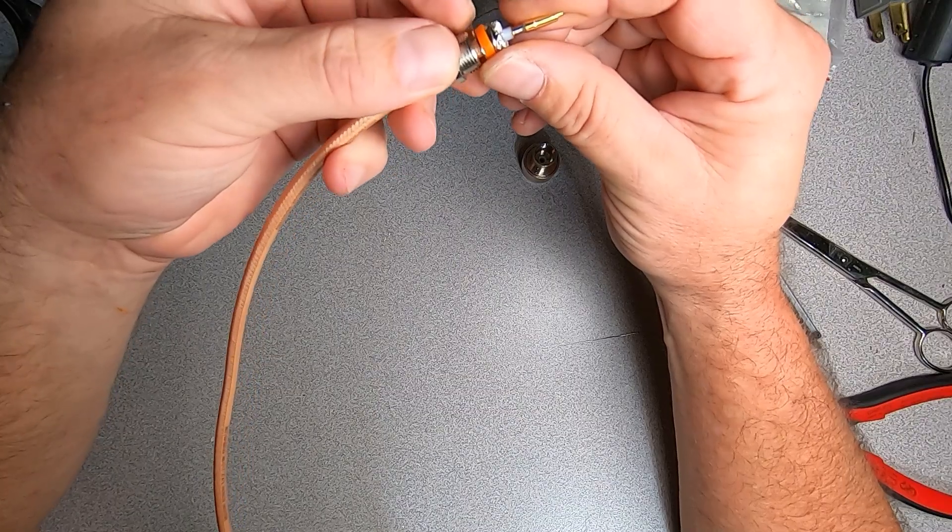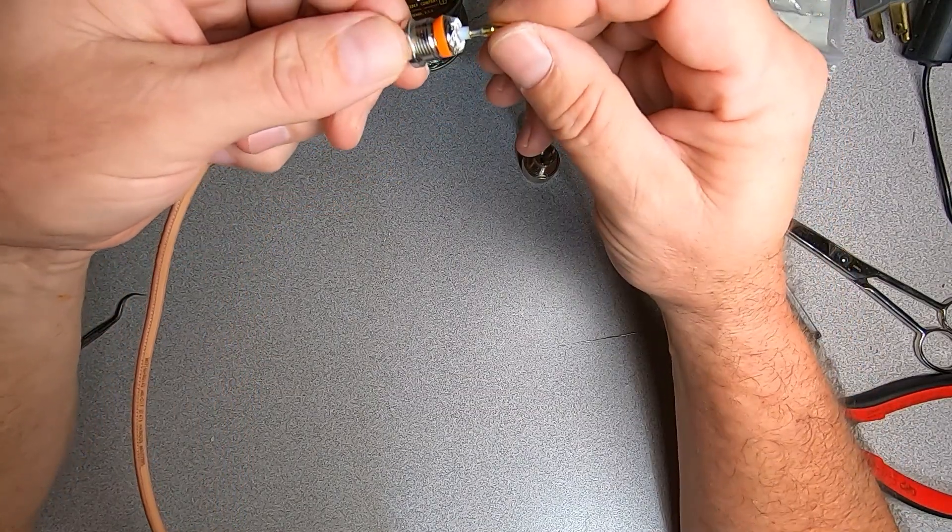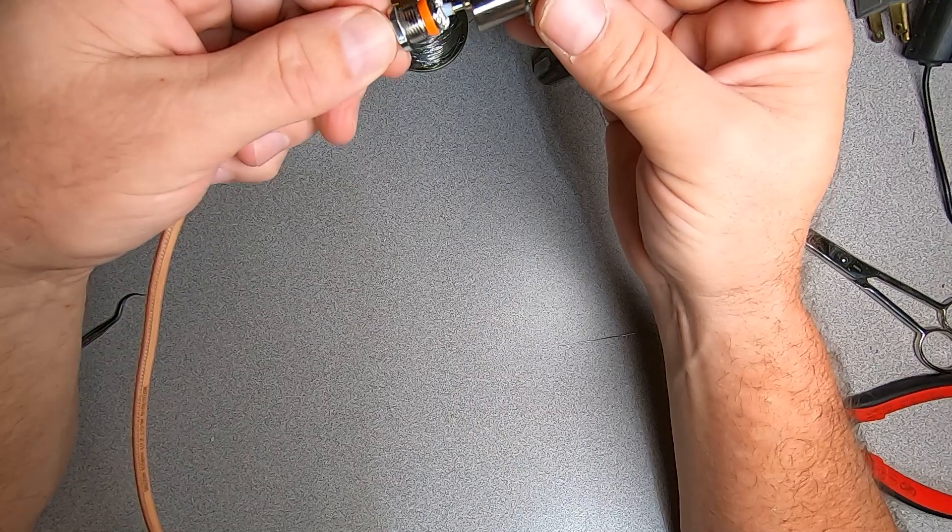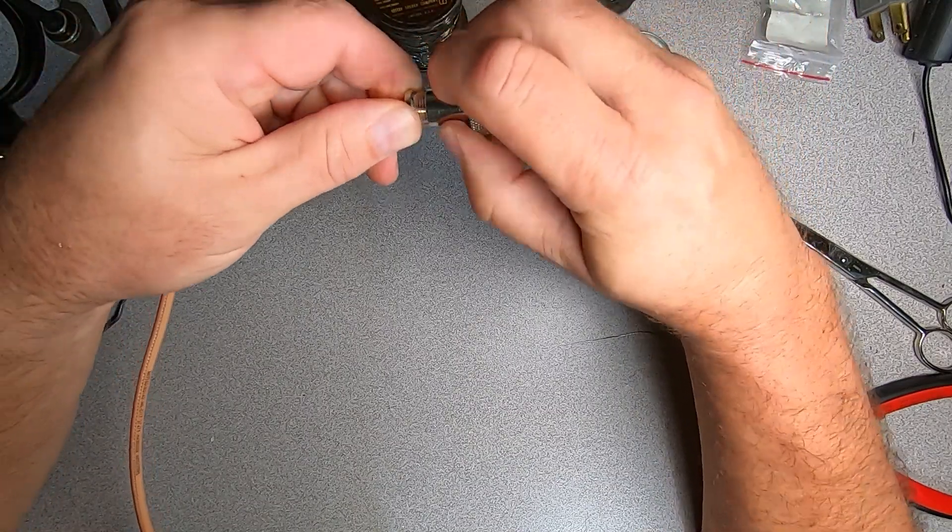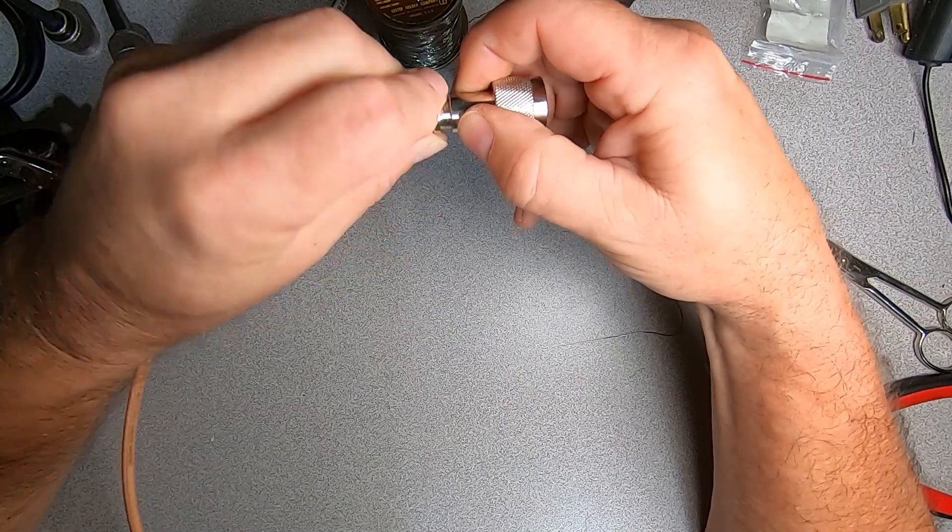And your washer and then your nut. Now you take your connector body and insert it and tighten it up.